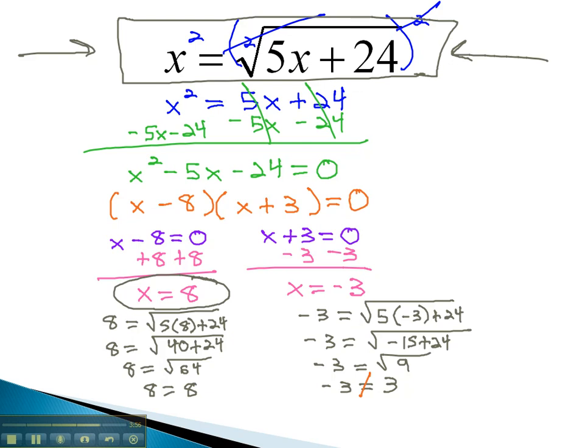This is why it's important to check our answers with even roots. The negative 3 does not work, and we must throw it out. The only answer that works is the positive 8. This is our final solution. With problems like this, it is important to remember to check your answers, as sometimes only one answer will work, sometimes both answers will work, and sometimes no answers will work, meaning there is no solution.